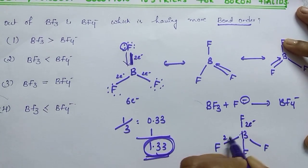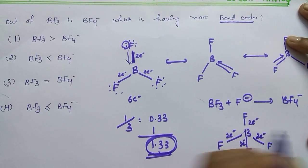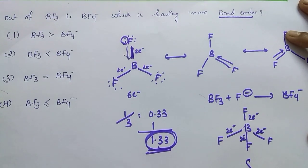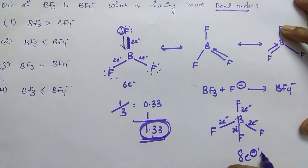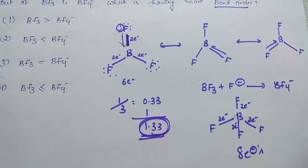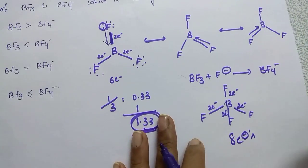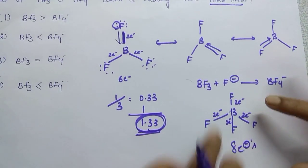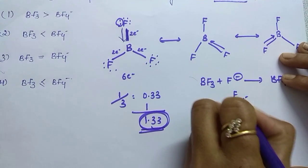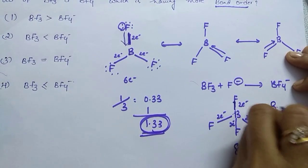2 electrons here, 2, 2, 2. The bond consists of 2 electrons. Total 8 electrons it is having. It is already stable. So there will be no back bonding in case of BF4 minus. So what is the bond order here? Here the bond order is just the number of bonds between boron and fluorine is 1.